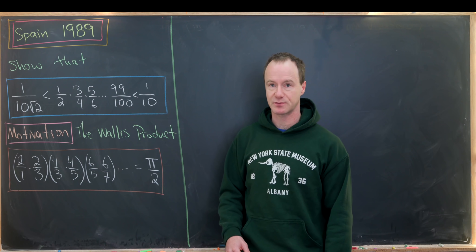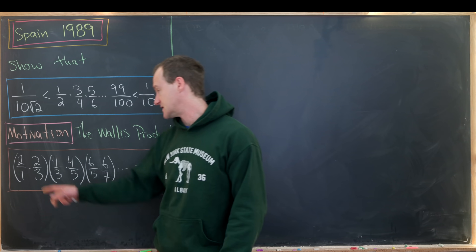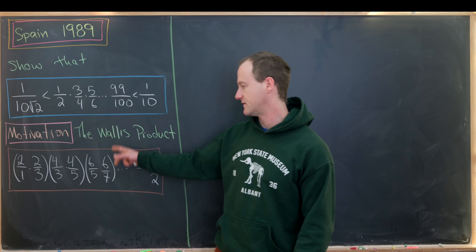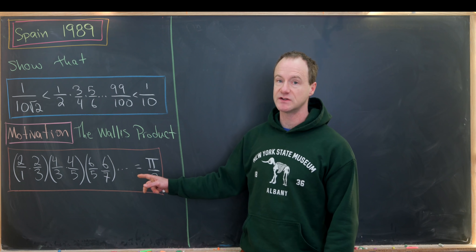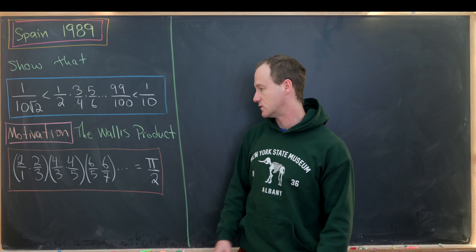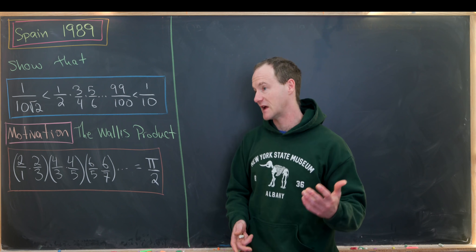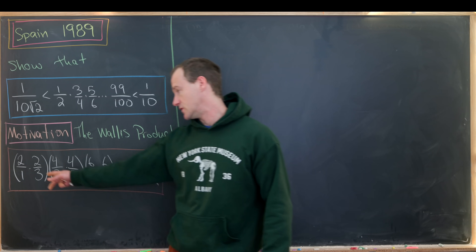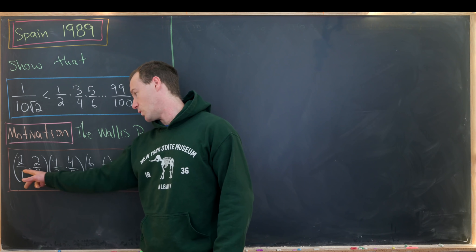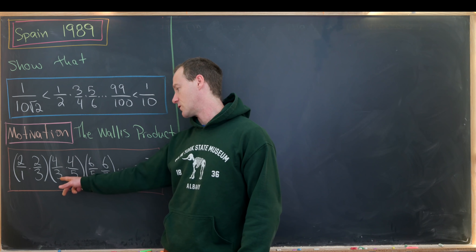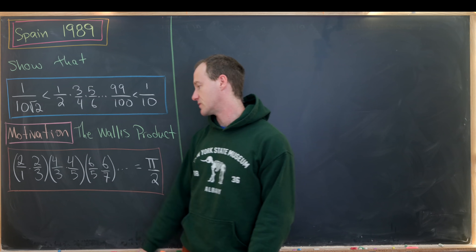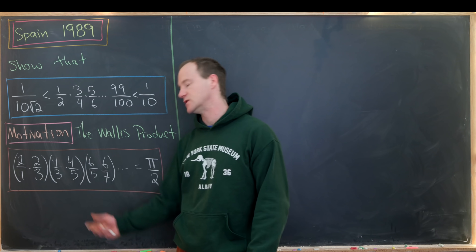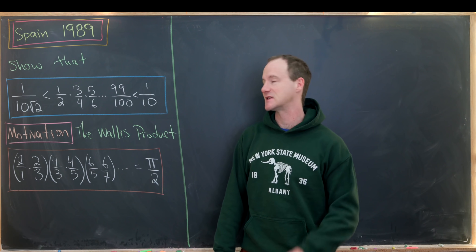Let's recall what this Wallis product is. It says that 2 over 1 times 2 over 3 times 4 over 3 times 4 over 5 times 6 over 5 times 6 over 7, so on and so forth — an infinite product equal to pi over 2. Traditionally the numbers are grouped as follows: 2 squared over 1 times 3, 4 squared over 3 times 5. So the even numbers are grouped and the odd numbers are associated in that offset way. Again, that's going to give us a hint.